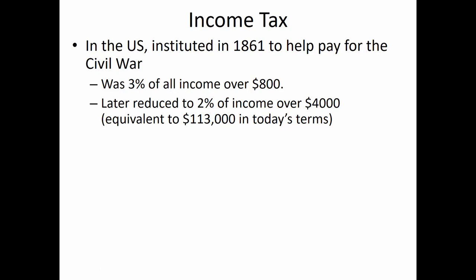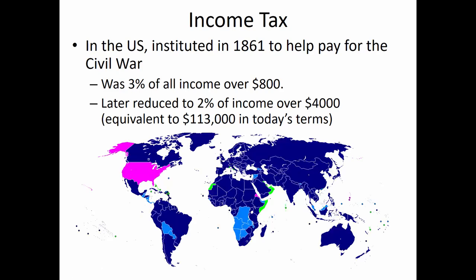Now $4,000 in today's terms is equivalent to about $113,000, so only the so-called 1% back then was paying income tax, and it was only 2% of their earnings. We're going to go through some tax tables today and you'll get a feel for how 2% and 3% compare to what people actually end up paying as an effective federal tax rate these days.